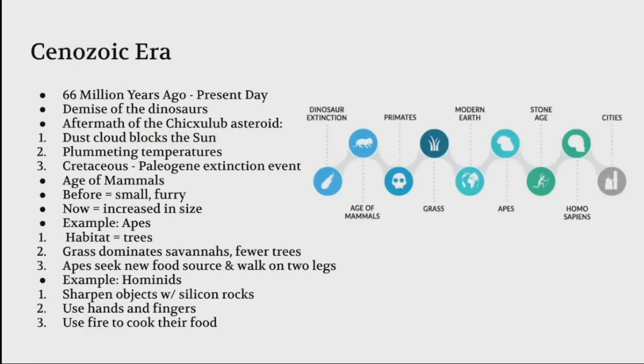Now we have the age of mammals. Mammals are now the new shining star. Before, they were really small furry animals that had to fear for their lives, but now they were increasing in size because they were the dominant species. One example is apes. They have habitats in trees, but then grass dominates the savannas, leading to fewer trees. The apes seek new food sources, and that's how they develop their two legs.